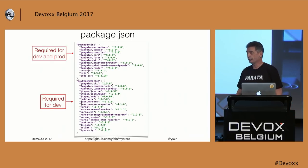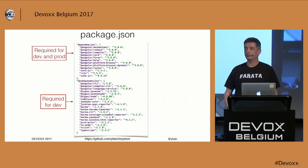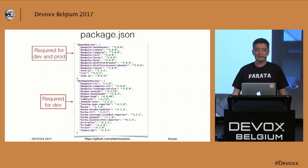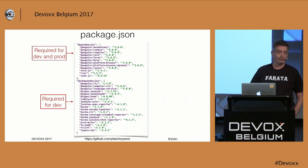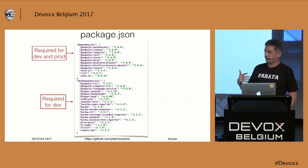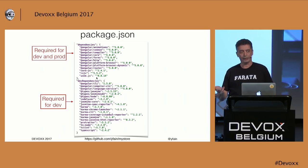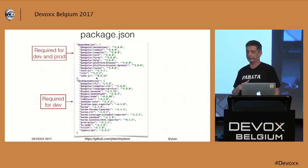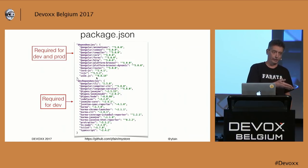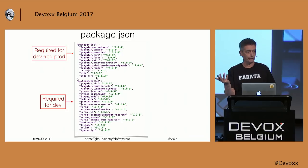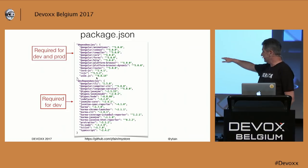Every project you create in Angular will have a file called package.json. If you're a Java developer, think of it like pom.xml — it specifies dependencies. package.json has two important sections: dependencies and devDependencies. Dependencies is a list of packages with their versions required to be deployed in production. DevDependencies is a list of packages required on the developer's machine that don't need to go into production — for example, TypeScript, which will be converted into JavaScript anyway, so you don't need it in production.